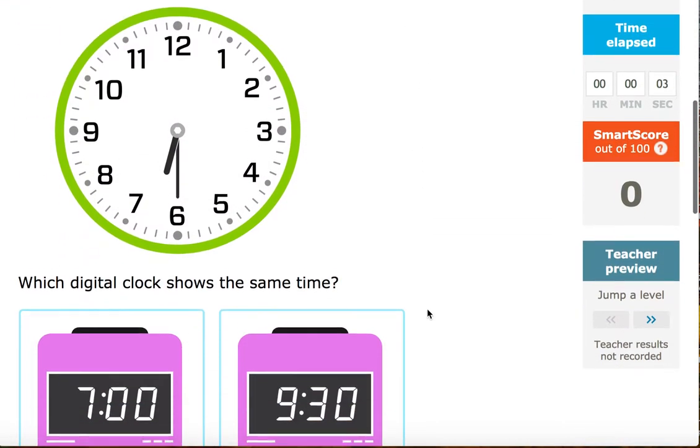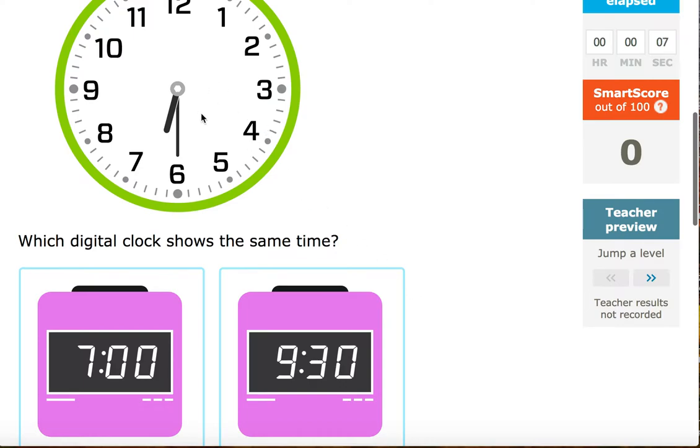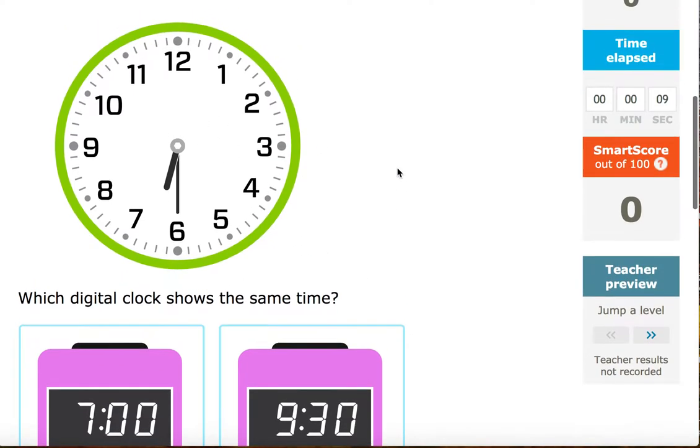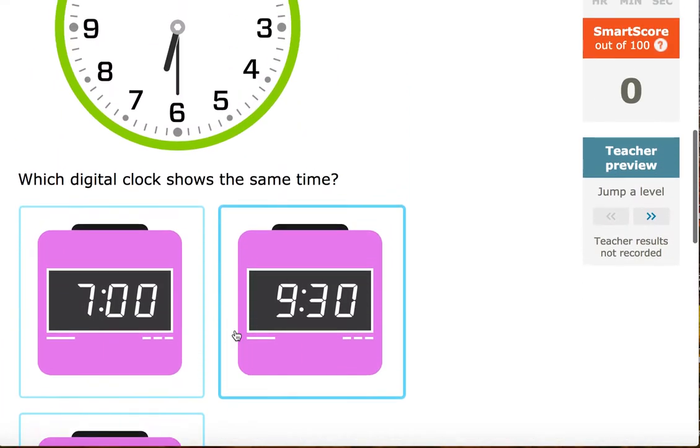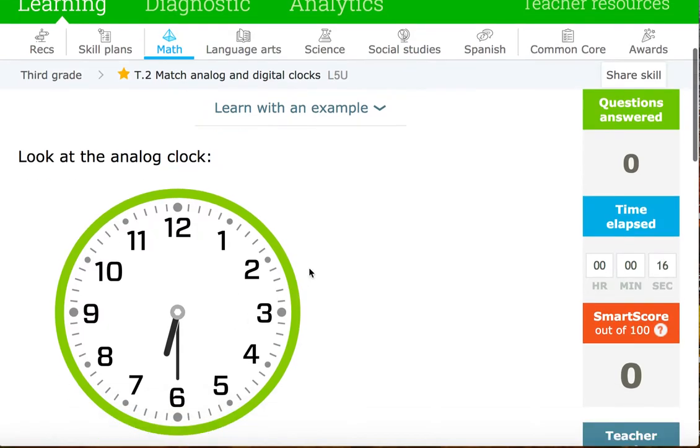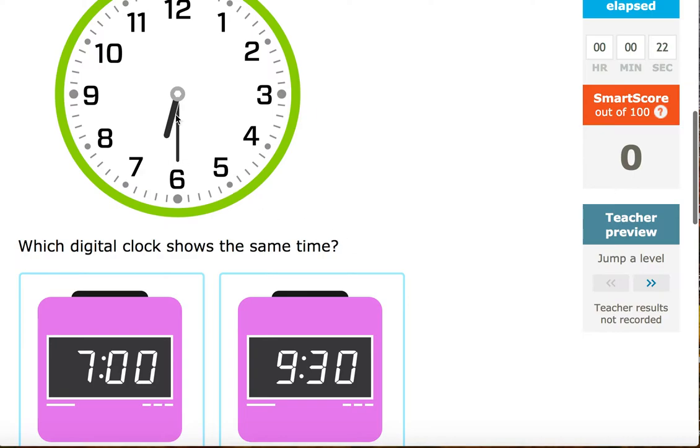Your goal for today is to state the time that's given on the analog clock. You're going to be given digital times as possible answers but what I want you to do is try to identify before you select. We know that the shorthand will tell you the hour. The long hand will tell you the minute. So first always identify the hour.